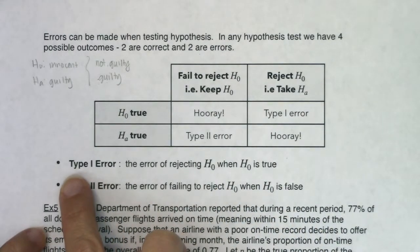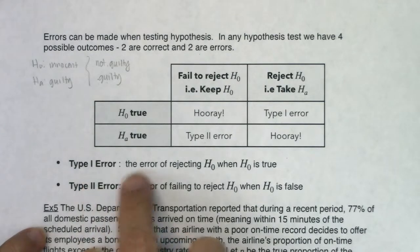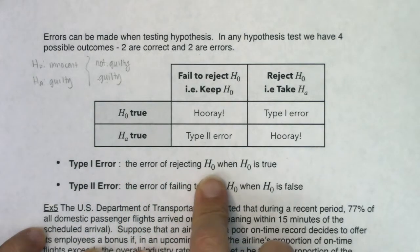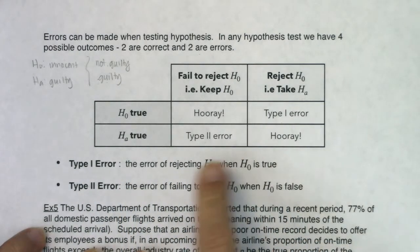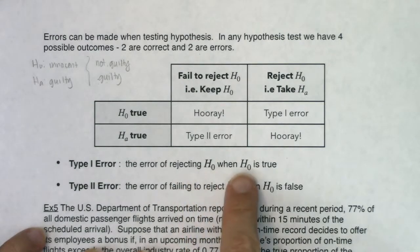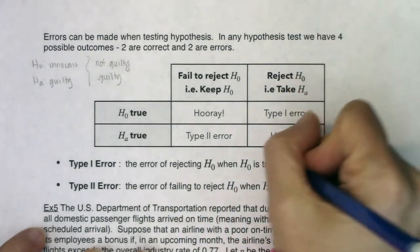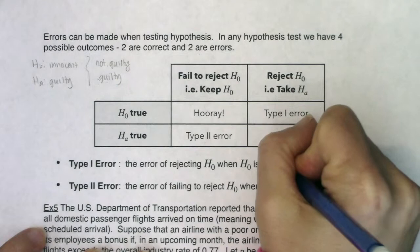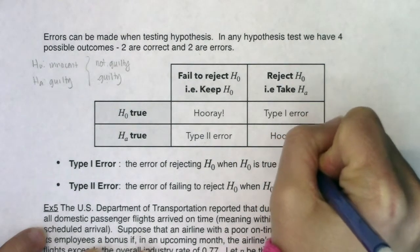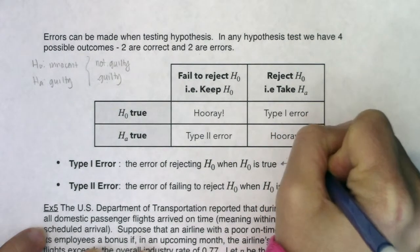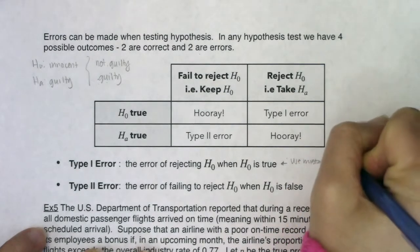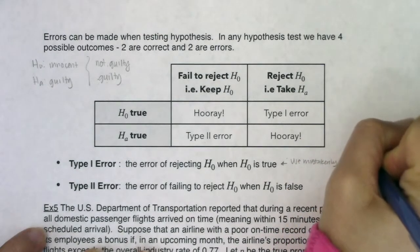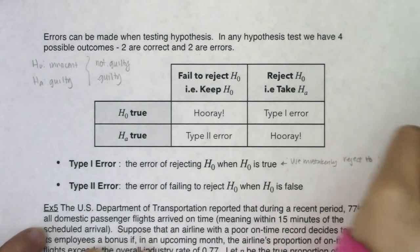A Type 1 error is the error of rejecting H naught when H naught is true. We are mistakenly rejecting a null hypothesis when the null is true — we would say we mistakenly reject H naught when it's true.